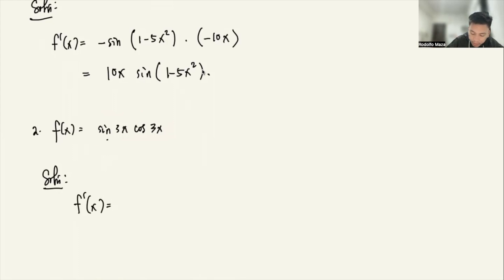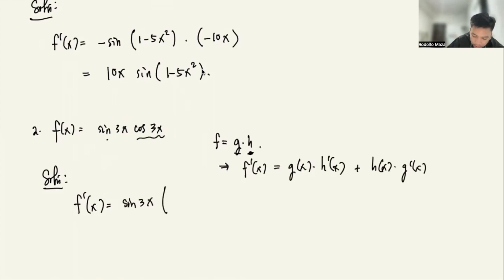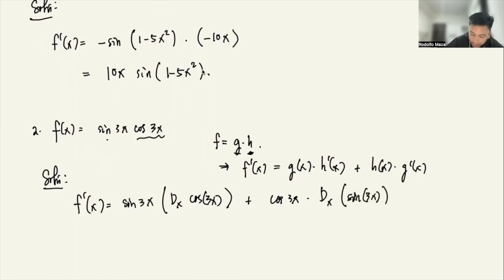Recall the derivative of a product. If f equals g times h, then f prime of x equals g(x) times h prime(x) plus h(x) times g prime(x). So you take the first function and multiply with the derivative of the second, plus the second times the derivative of the first. Applying this: copy sine(3x) times the derivative of cosine(3x), plus cosine(3x) times the derivative of sine(3x).